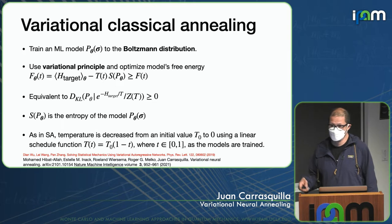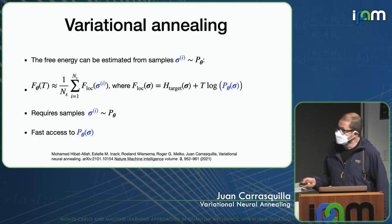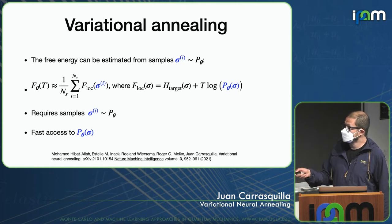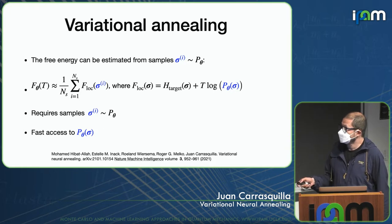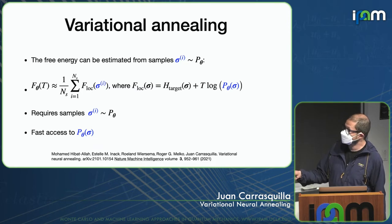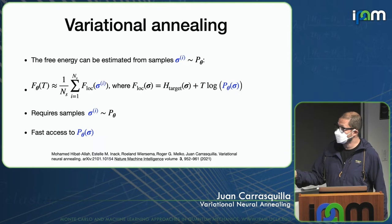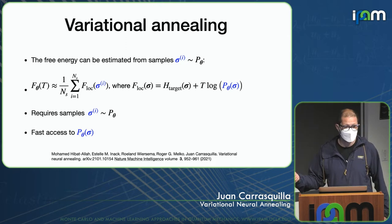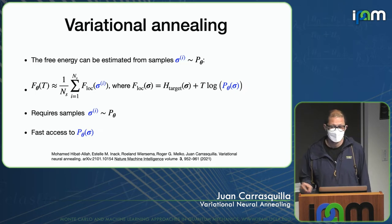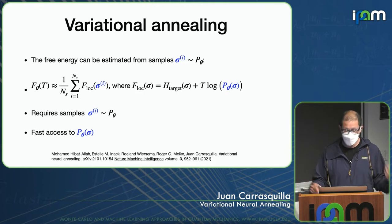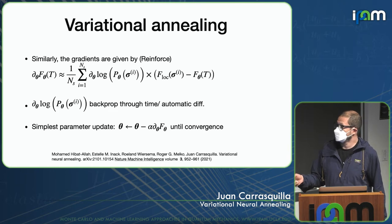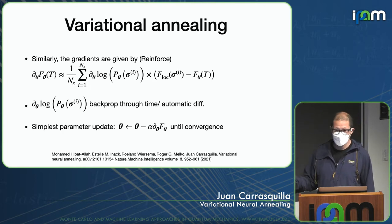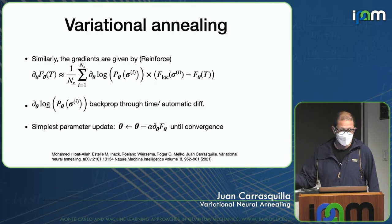To do this we need several ingredients. We estimate the variational free energy through samples, requiring a probabilistic model we can sample from. We also need access to P — the probability distribution — to compute the free energy, so the model must allow computing the probability of a given configuration sigma without expensive computations of a partition function. The model must be normalized. We then optimize this free energy via gradient descent using backpropagation.